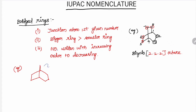Another example: junction atom is identified. Second rule — number given from bigger ring to smaller ring: 1, 2, 3, 4, 5, 6, 7, 8. This is also Bicyclo — here three, here two, here one. Three, two, one — 8 carbons available: Octane. So the name is Bicyclo[3.2.1]octane.